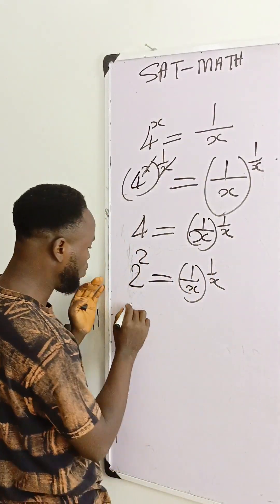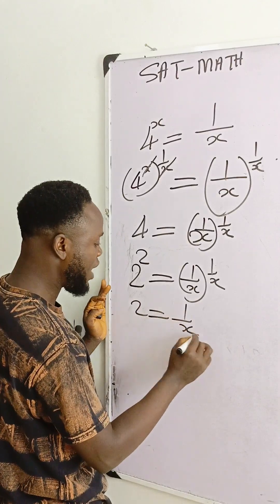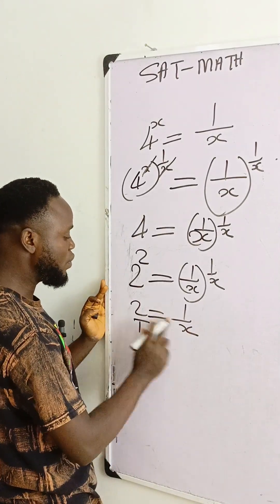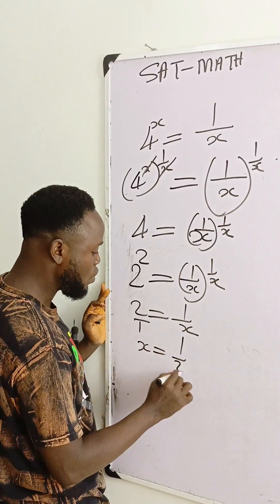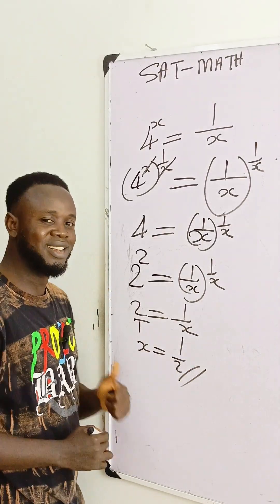So 2 is equal to 1/x, and if you cross multiply and collect terms, x is equal to 1/2 as a final answer. Thank you.